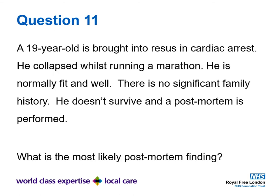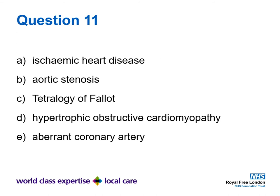Question eleven. A 19-year-old is brought into resus in cardiac arrest. He collapsed whilst running a marathon and is normally fit and well with no significant family history. He does not survive and a post-mortem is performed. What is the most likely post-mortem finding? Is it A) ischaemic heart disease, B) aortic stenosis, C) tetralogy of Fallot, D) hypertrophic obstructive cardiomyopathy, or E) aberrant coronary artery?